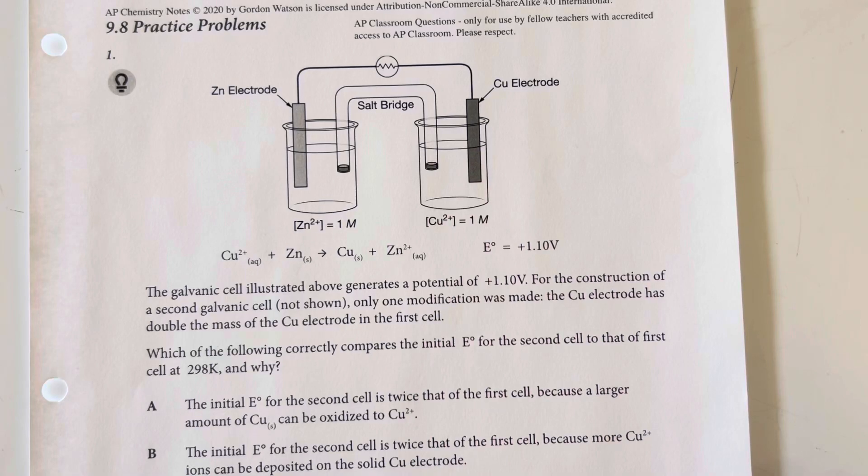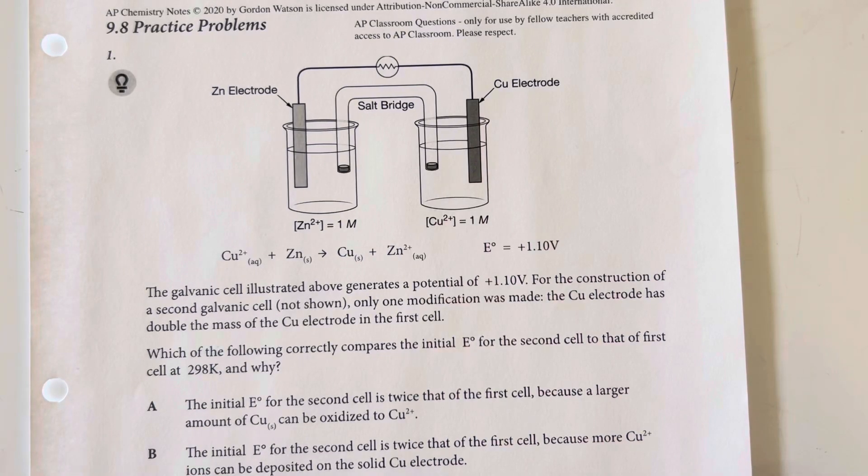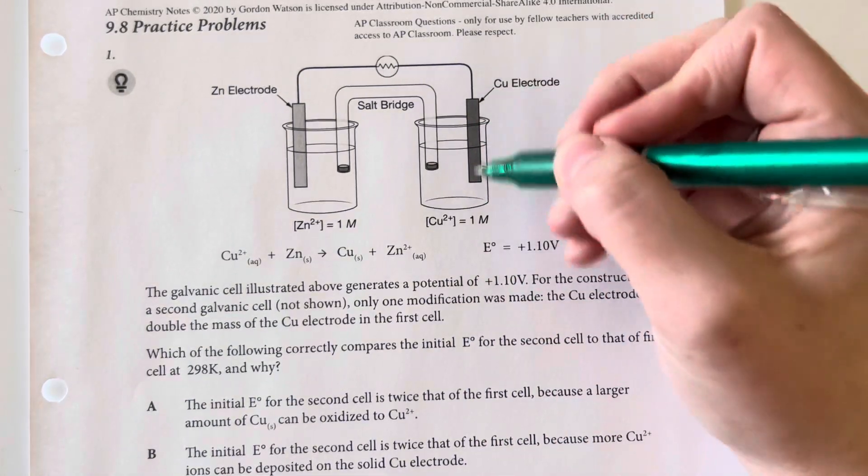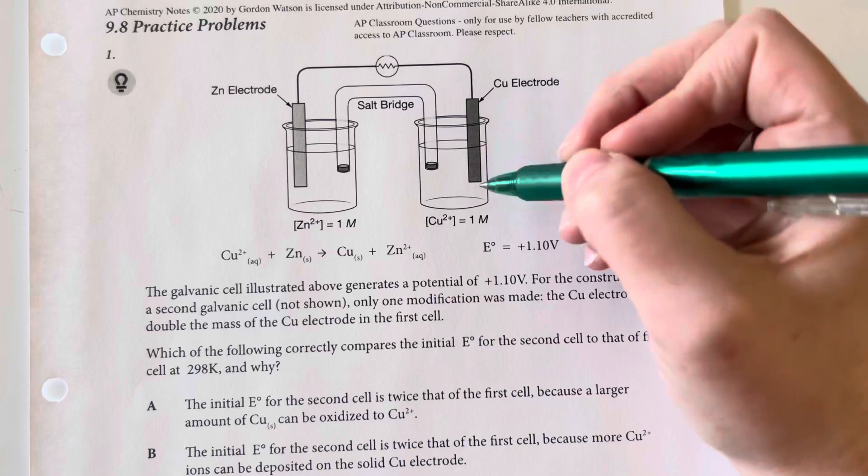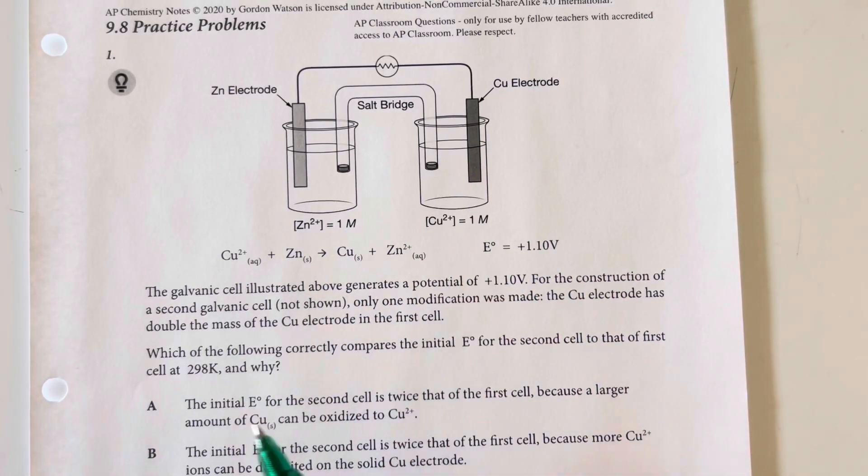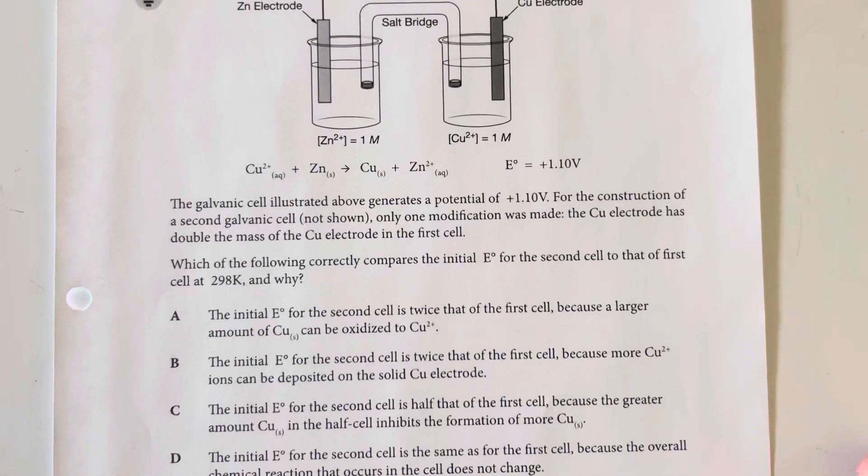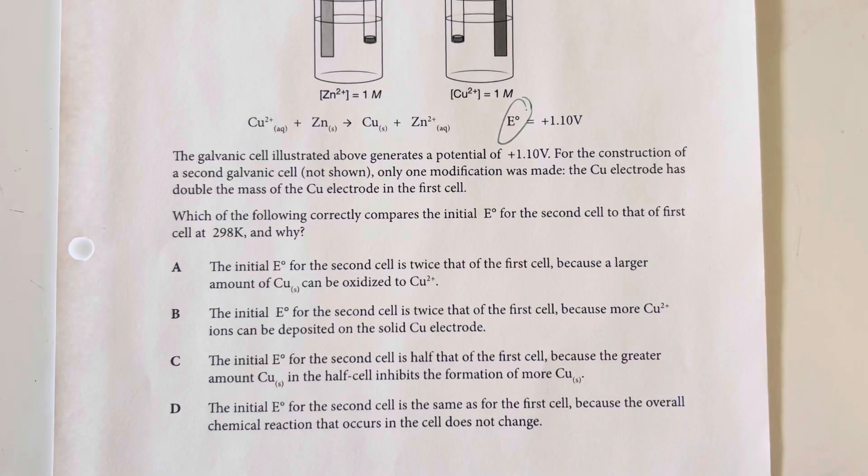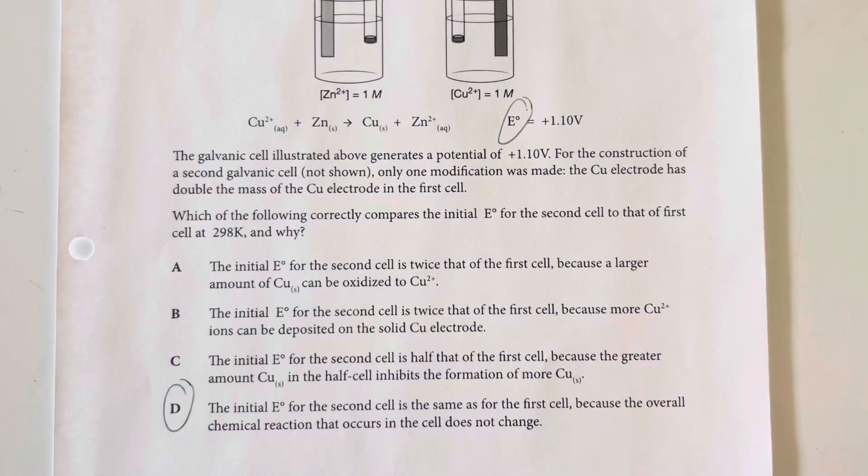Which of the following correctly compares the initial E° for the second cell to that of the first cell at 298 Kelvin? We have just increased the size of the copper electrode. We didn't change the concentrations at all or the overall reaction, so E° will be the same because the chemical reaction does not change. That would be option choice D.